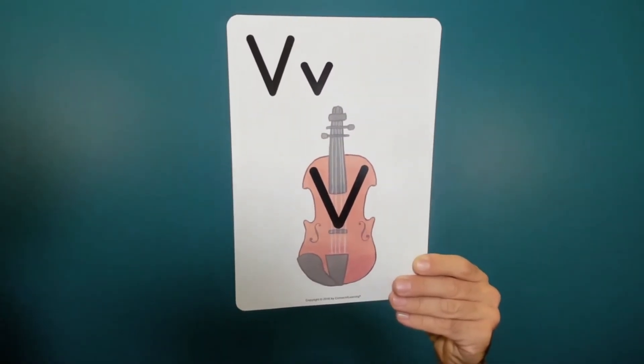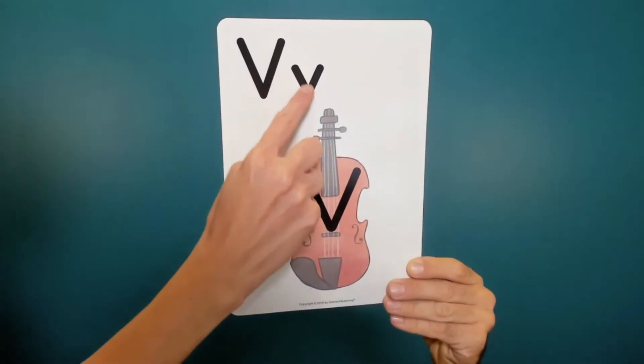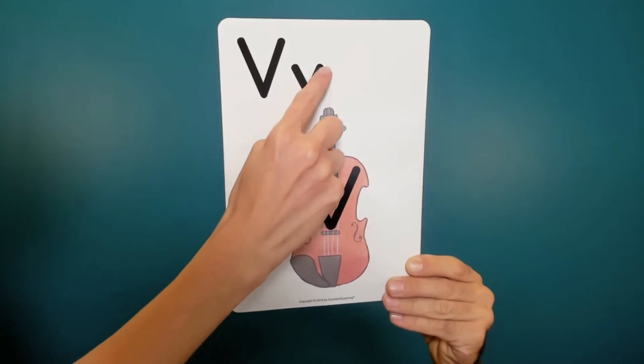The lower case V. Little line down to the right, then little line up to the right.